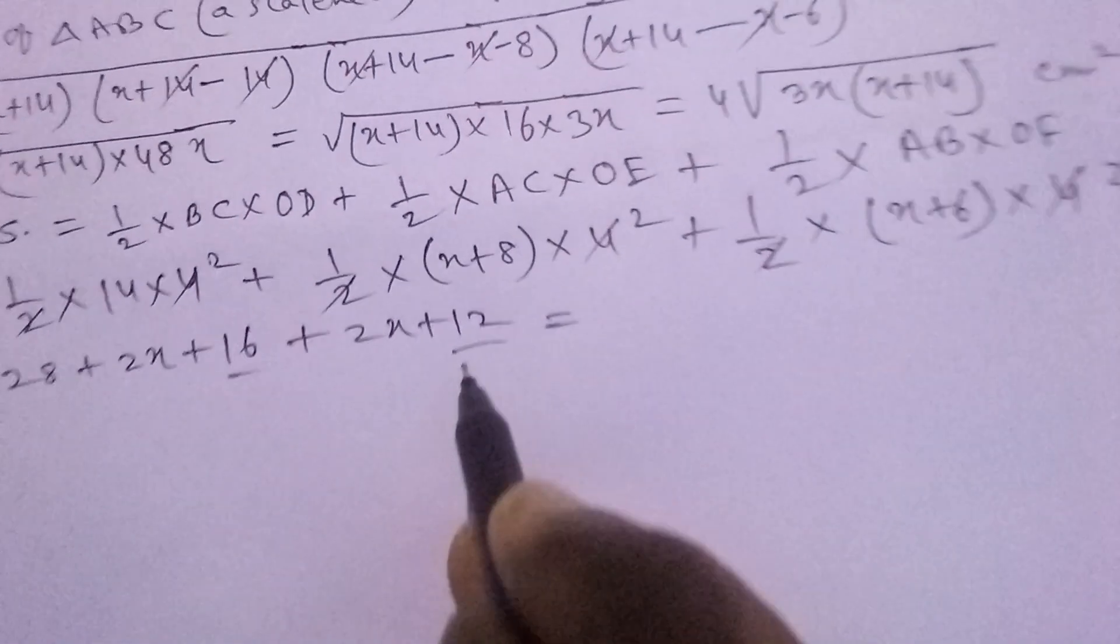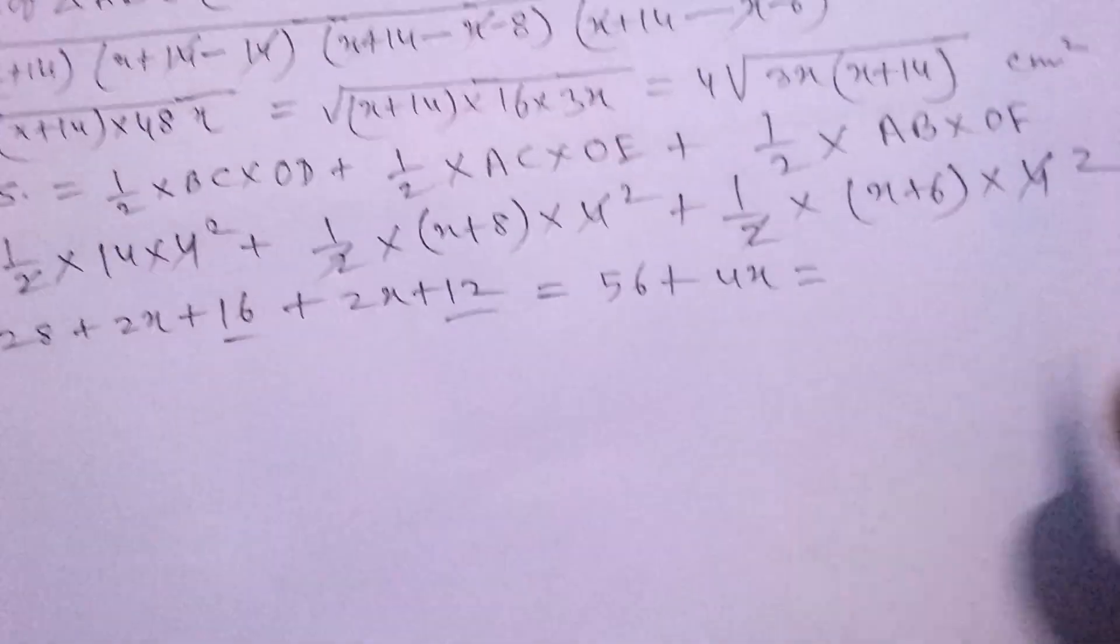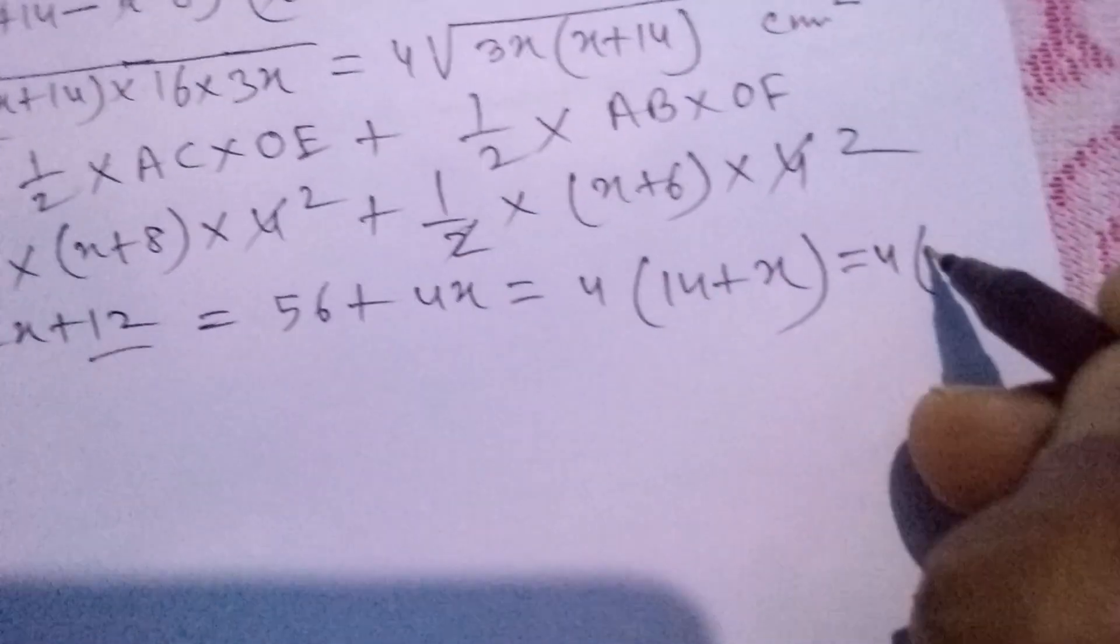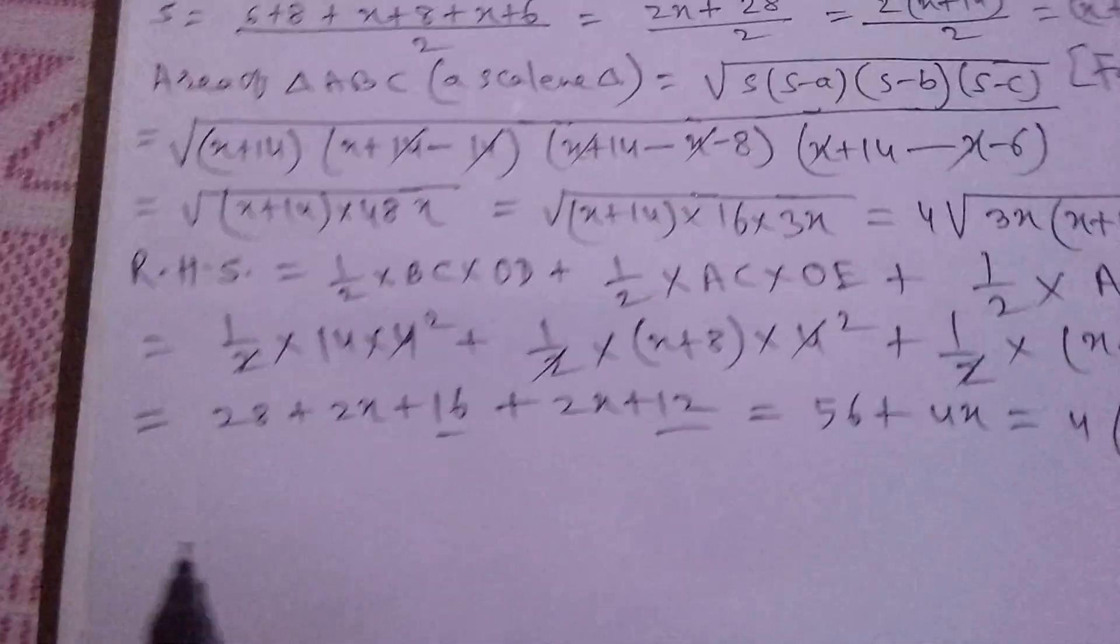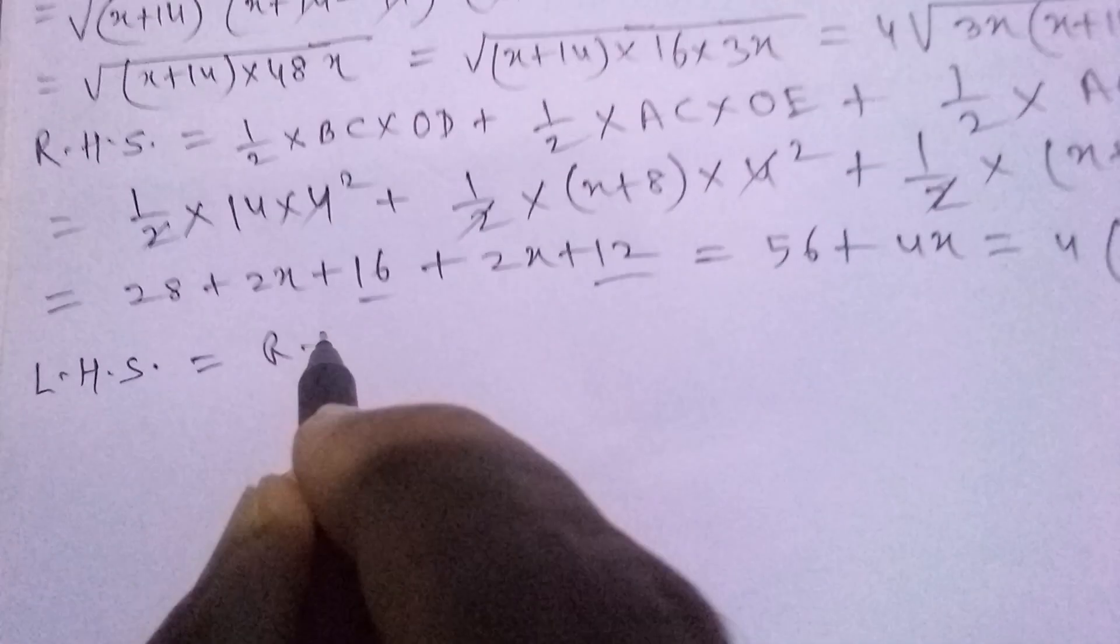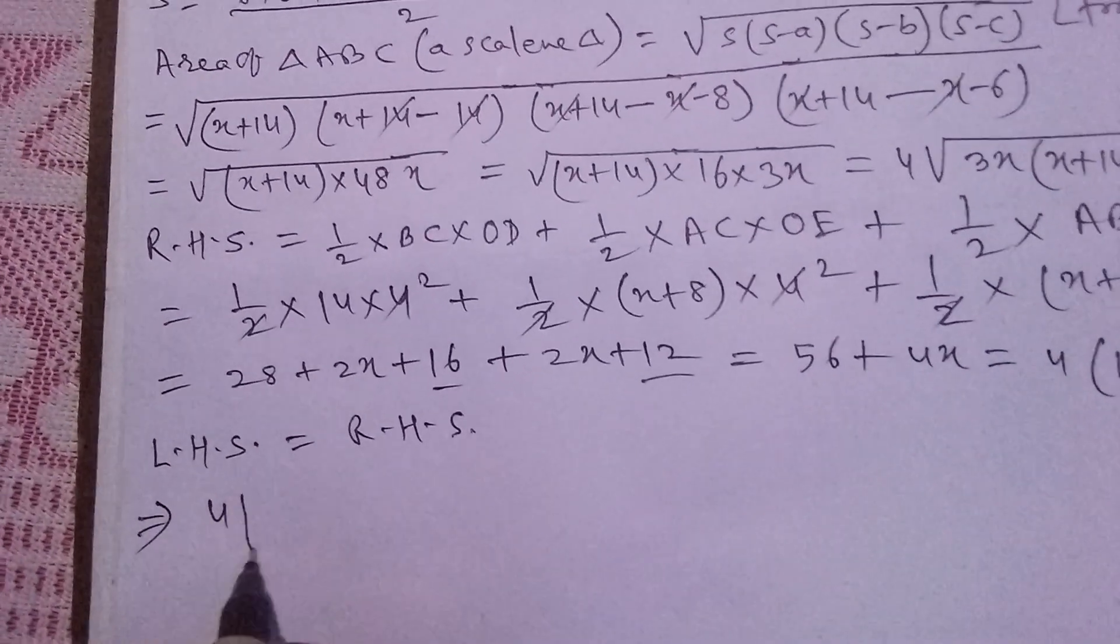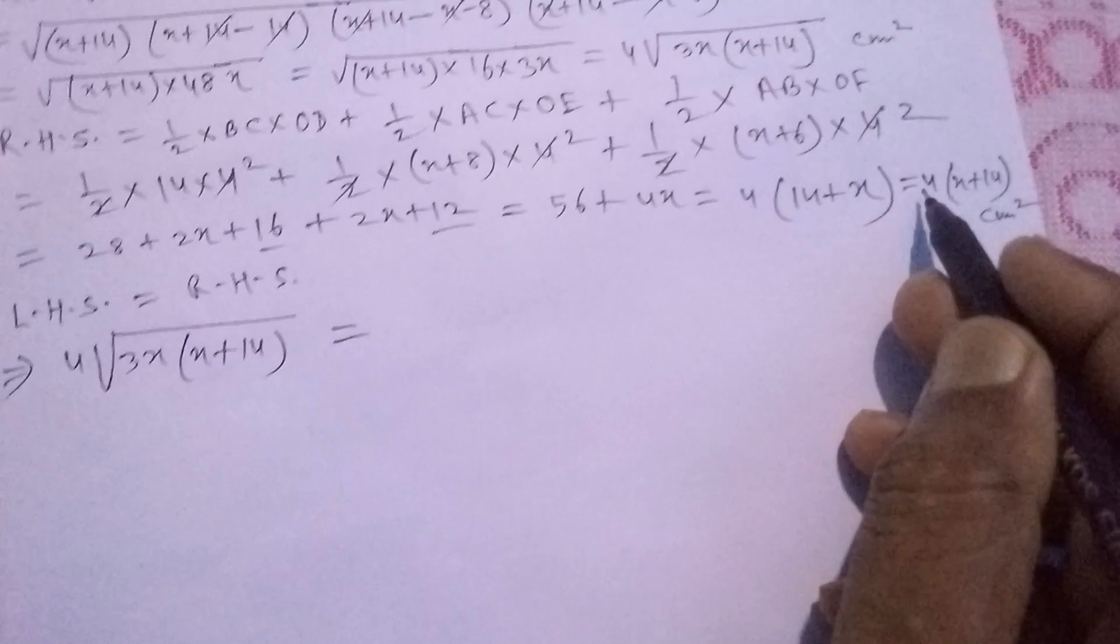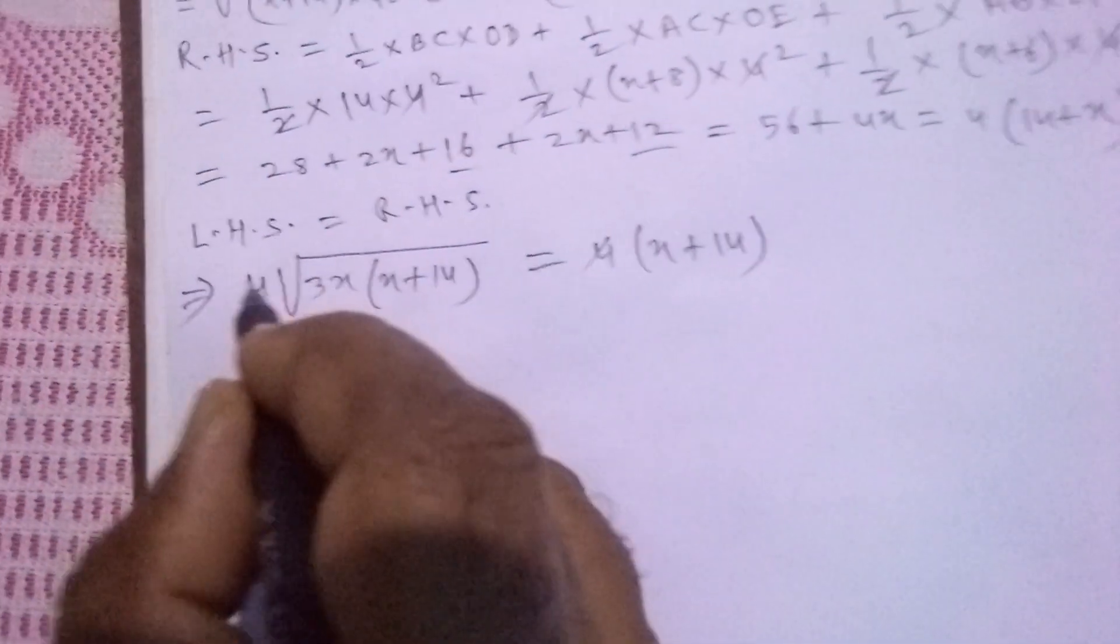This equals 56 plus 4X. Taking 4 common, we get 4(14+X), which is also written as 4(X+14). This is RHS. Now LHS equals RHS. We put the values: 4√(3X(X+14)) equals 4(X+14).